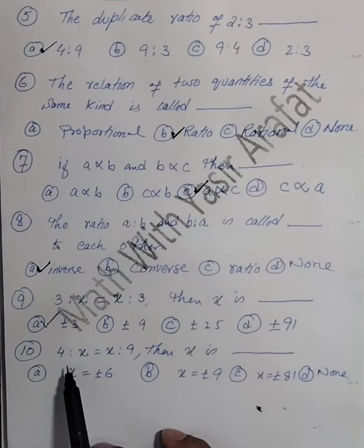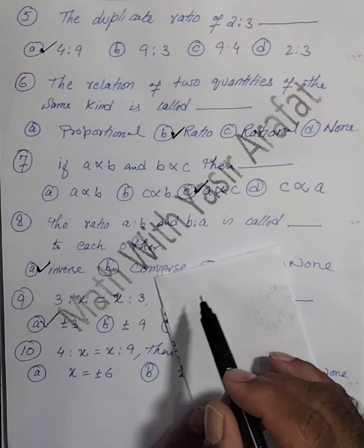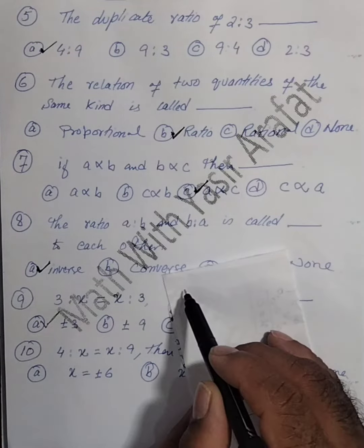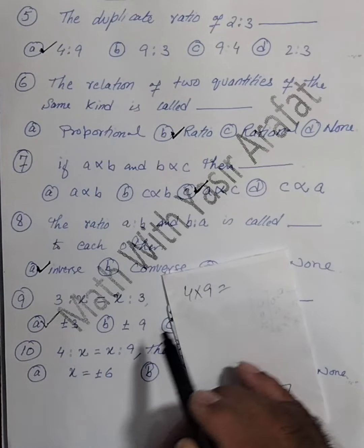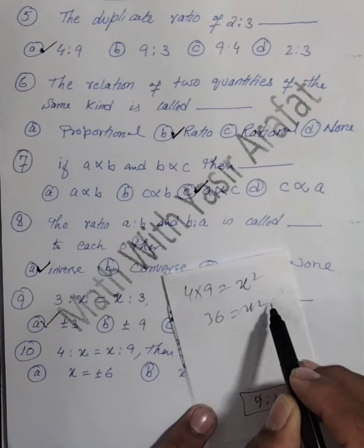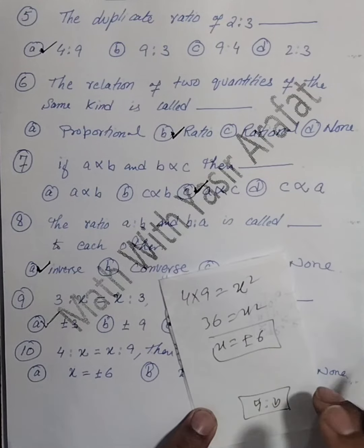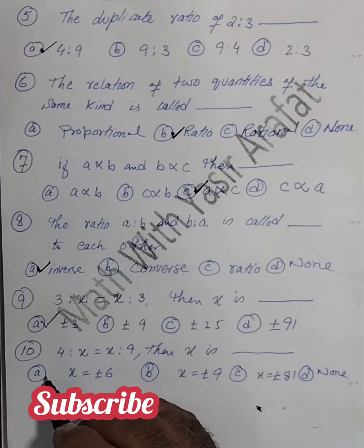Now come to the last MCQ here students. This is 4 ratio x equals x ratio 9. Again we have to use the same strategy here. That is the product of extremes, that is 4 multiplied by 9, and x into x is x squared. 4 nines are 36, so x equals plus minus 6. So the correct option is 6.